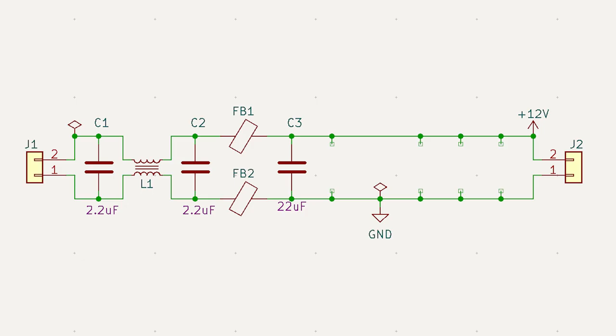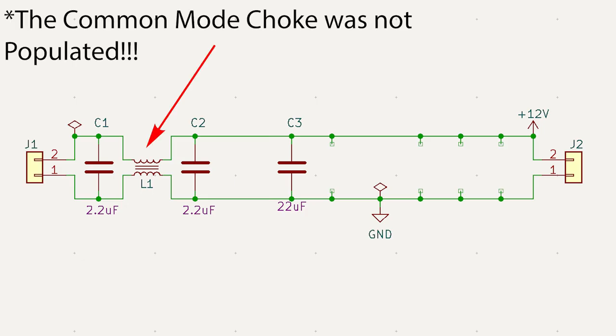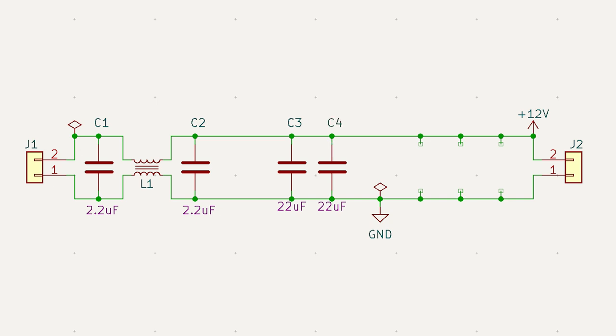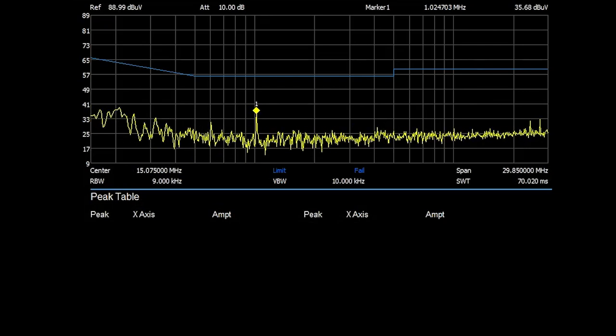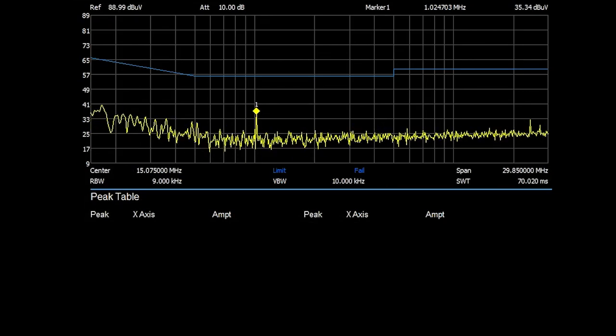For the final test, I removed both of the ferrites and just shorted across. I then populated the pi filter and the pi filter is the 22 microfarad capacitor, 47 microfarad, and 2.2 microfarad ceramics. And it's also the 2.2 microhenry inductor. The trace for this setup is really similar to the prior test with the ferrites. There's just a small peak at the fundamental frequency of around 37 dBµV.